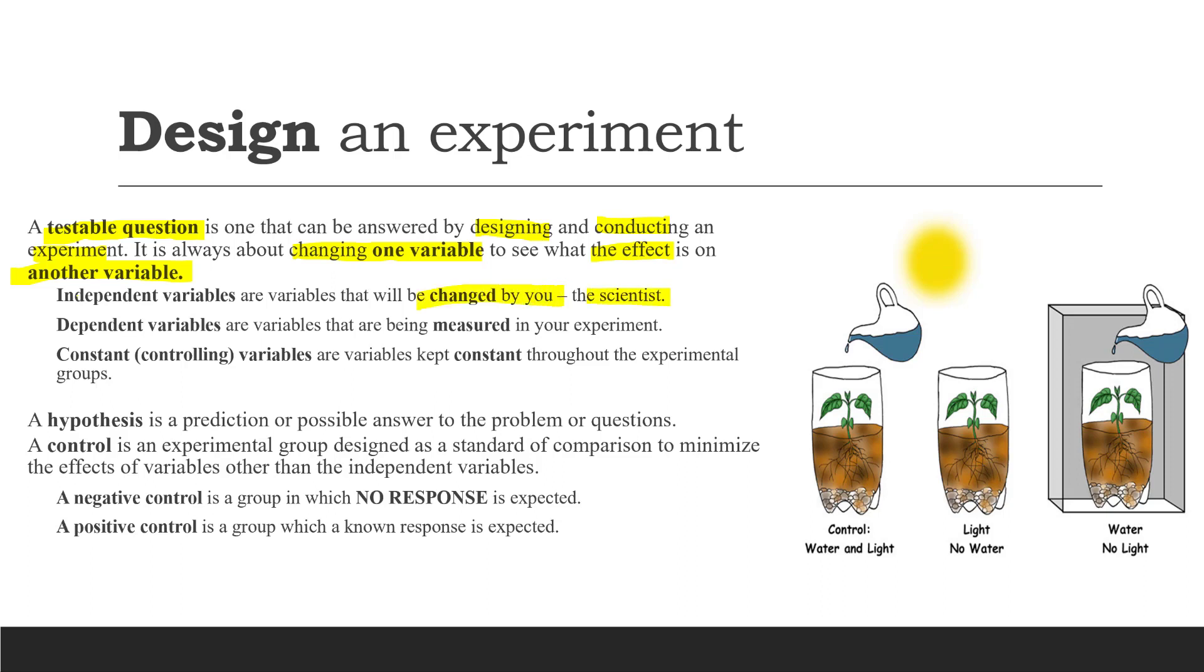If the variable is changed by you, the scientist, it is called independent variables. Dependent variables are variables that are being measured in the experiment. Constant or controlling variables are variables that are kept constant throughout the experimental groups.